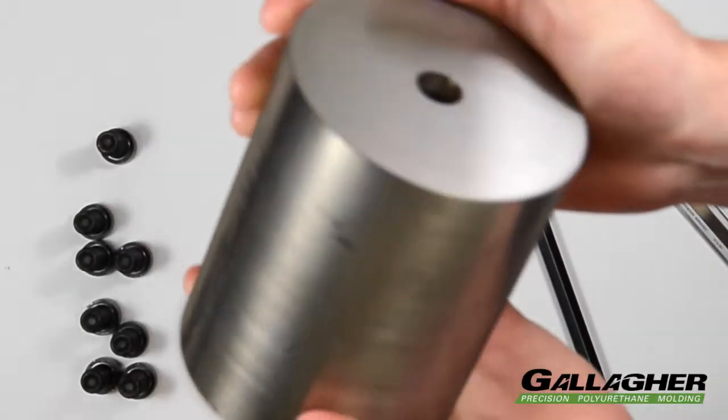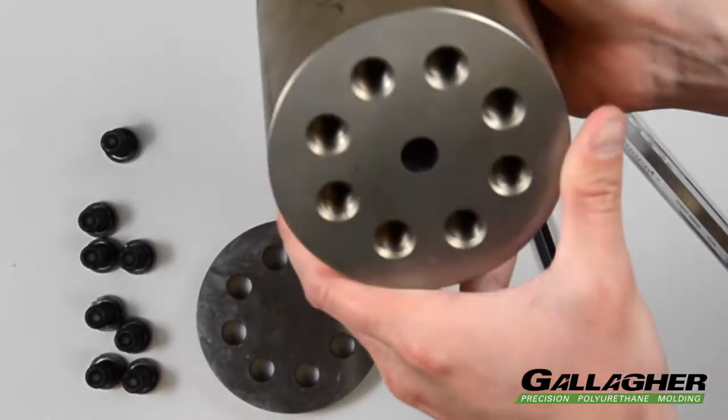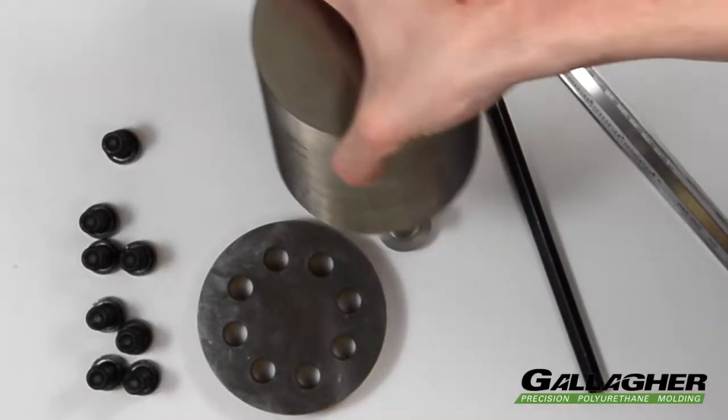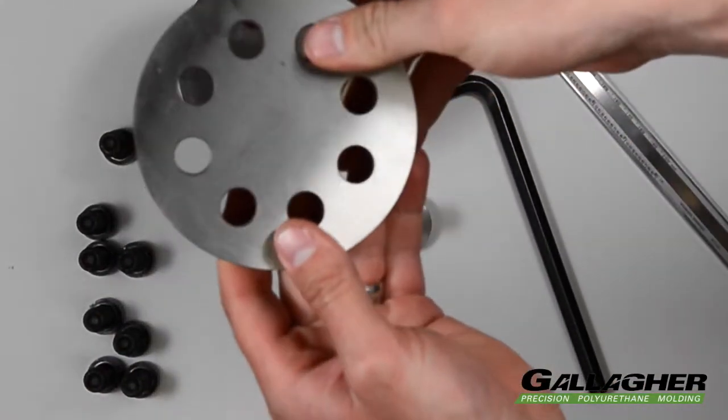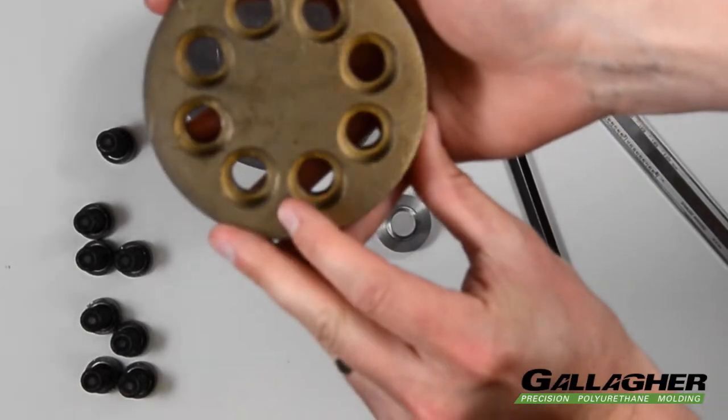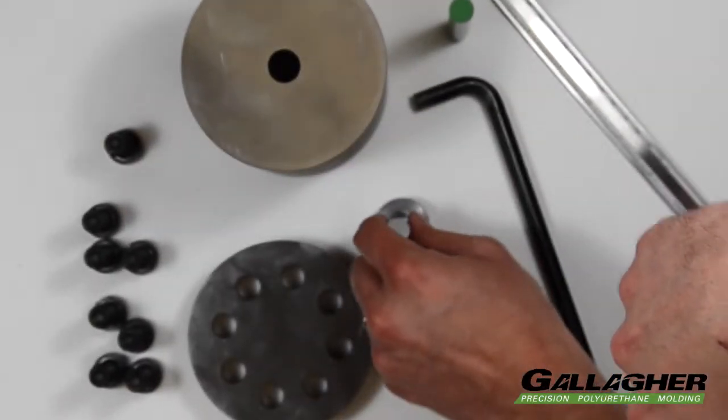This is the test fixture that we will use to determine the bulk modulus of our solid cast polyurethane sample. The test fixture is built to be rigid so that when force is applied, the cavity within the fixture will remain unchanged. It was built with a removable base to prevent trapping any air when the sample is inserted.